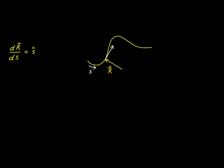In particular, what we want to do today is to ask this question: what does it mean to take the second derivative of our position vector with respect to the arc length? We know what the first derivative is, but what does it mean if we apply the second derivative? Well, since we know this relationship gives us the unit vector s-hat, this is equivalent to the simple derivative of our unit vector with respect to the arc length.